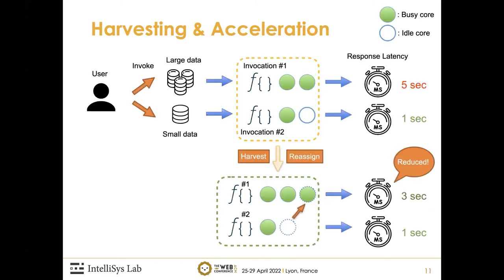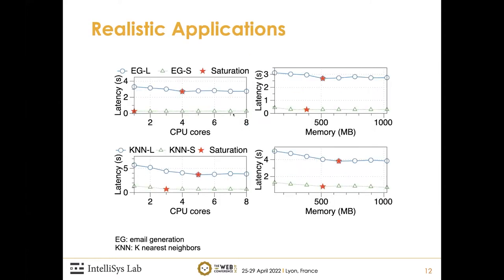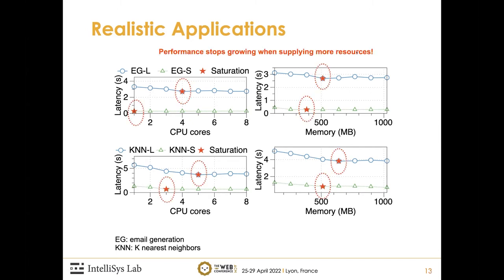Readers may wonder how to identify the actual resource demand of a function invocation given its input data. We found that there is a resource saturation point. Given a function and an input size, there exists a resource allocation saturation point: allocating resources beyond this point can no longer improve performance, but allocating below it severely degrades performance. For two serverless functions — email generation (EG) and K-nearest neighbors (KNN) — both CPU and memory consumption show a saturation point, marked with red stars, where performance stops growing when supplying more resources.